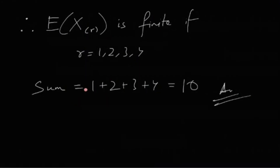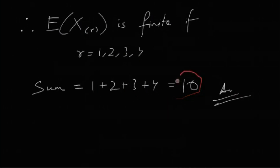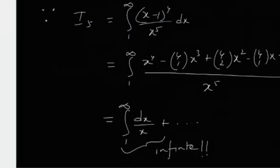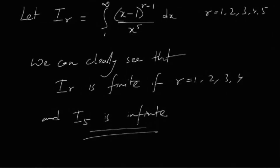Therefore the sum of all values of r for which E[X_(r)] is finite is 1 + 2 + 3 + 4 = 10. So 10 is the answer — only r = 5 is excluded from the sum because E[X_(5)] is not finite. The ultimate answer is 10.